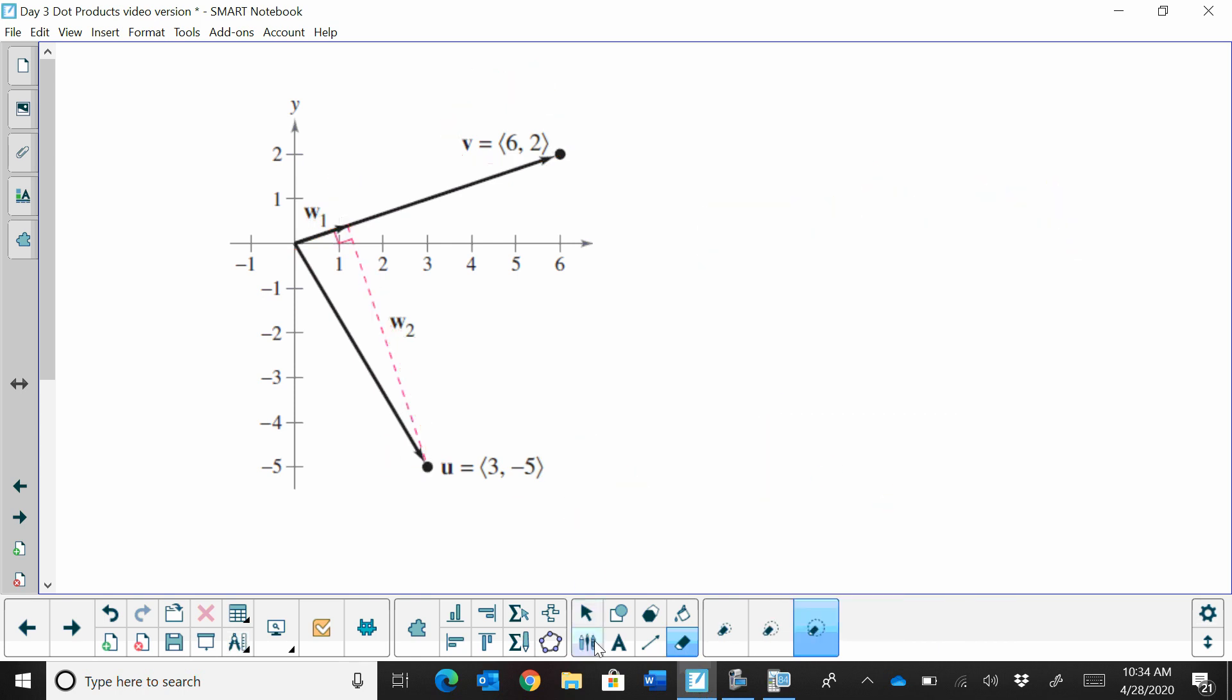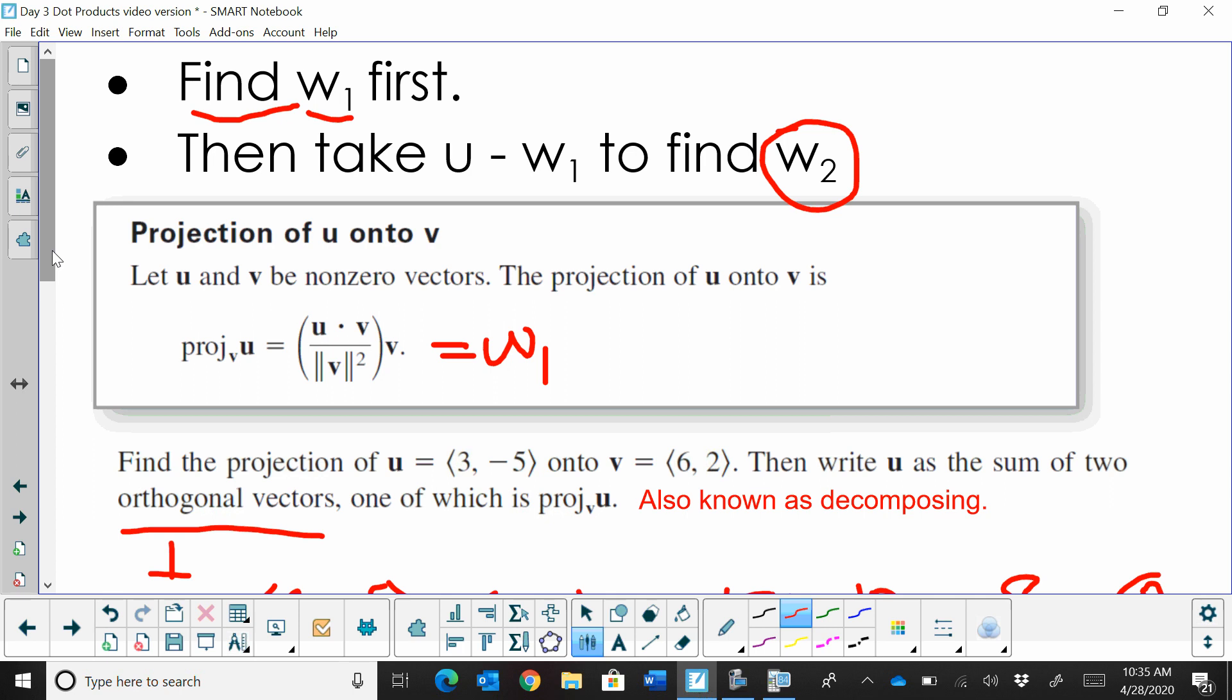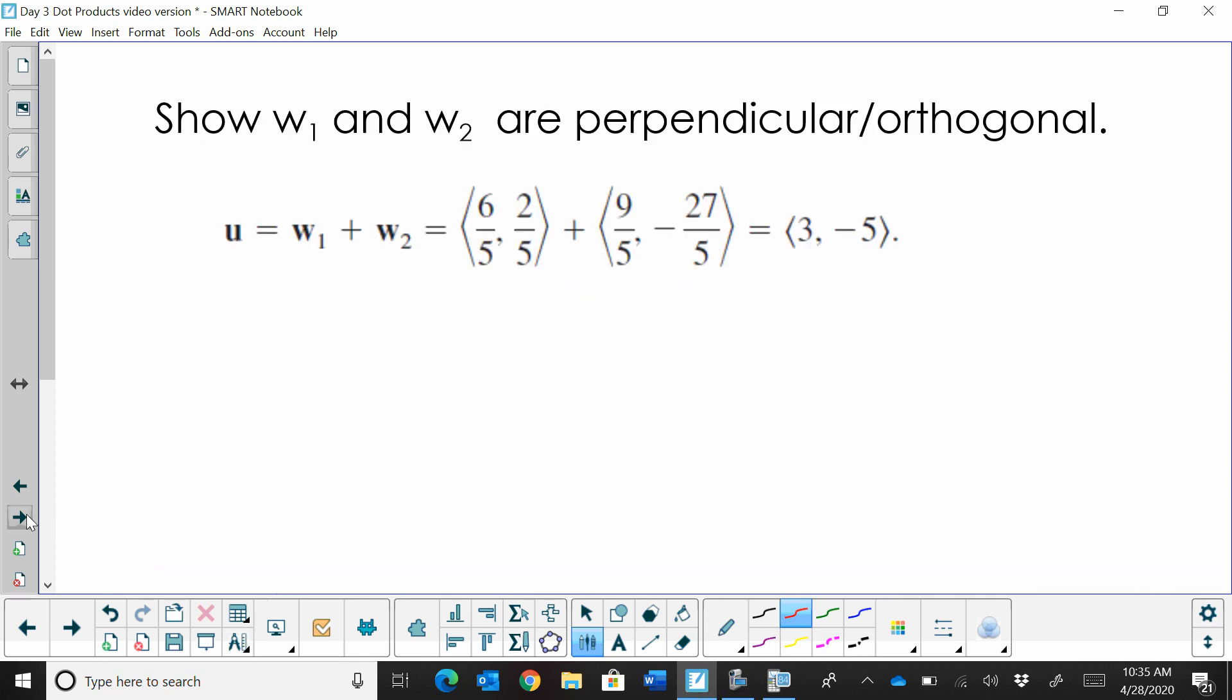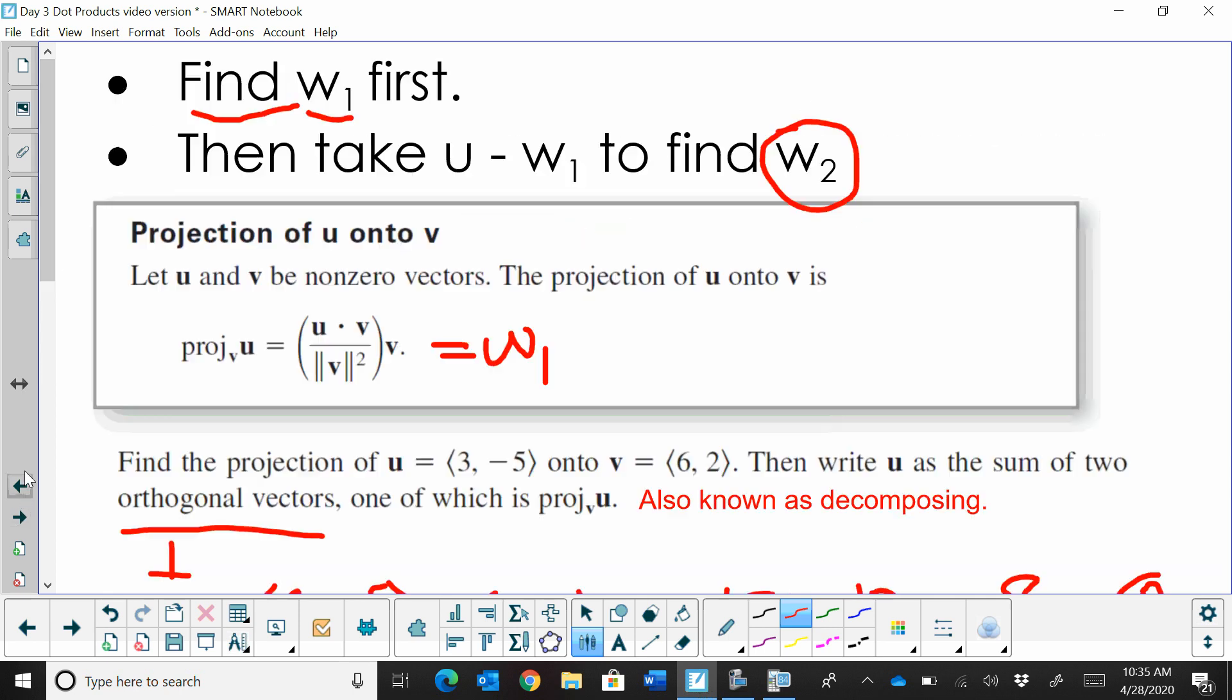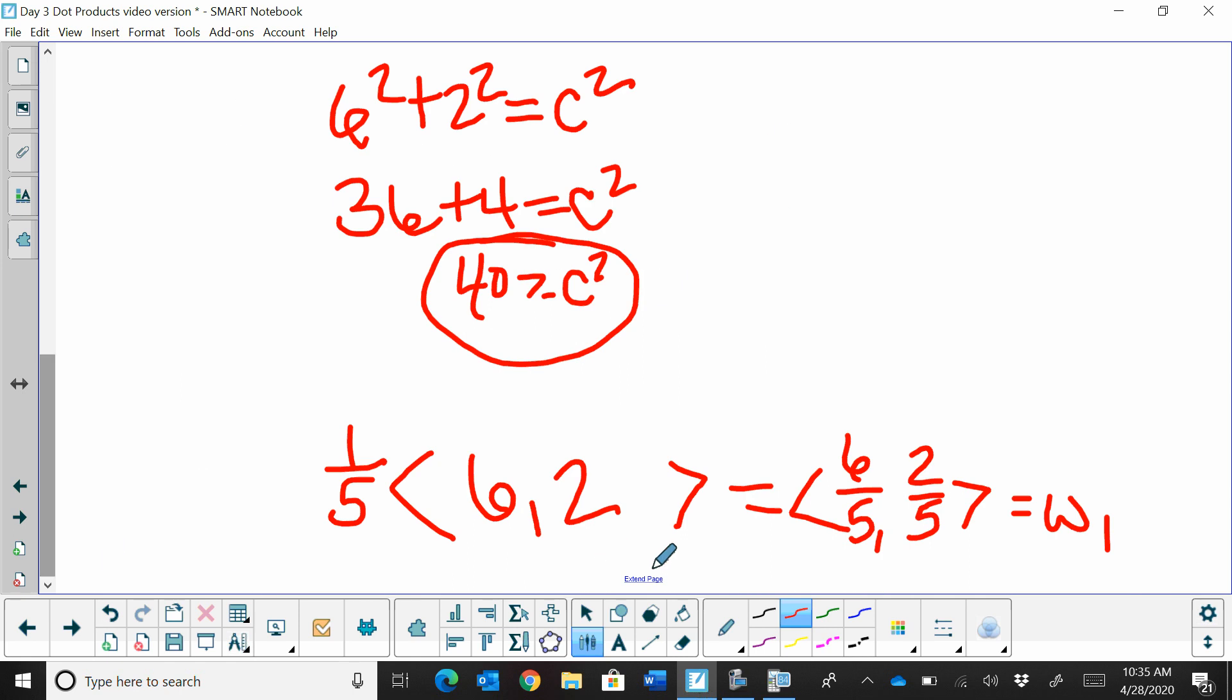What we did is we took, using our formula, and we said how far up this vector do we go? Well, it kind of looks like it's a fifth, right? So 1, 2, 3, 4, 5. So we went up 1/5 of the vector, and then we're going to turn at a 90-degree angle, and that's going to give us our w sub 2. So that's what we're doing. Now, once we get to here, how do we find the second vector?